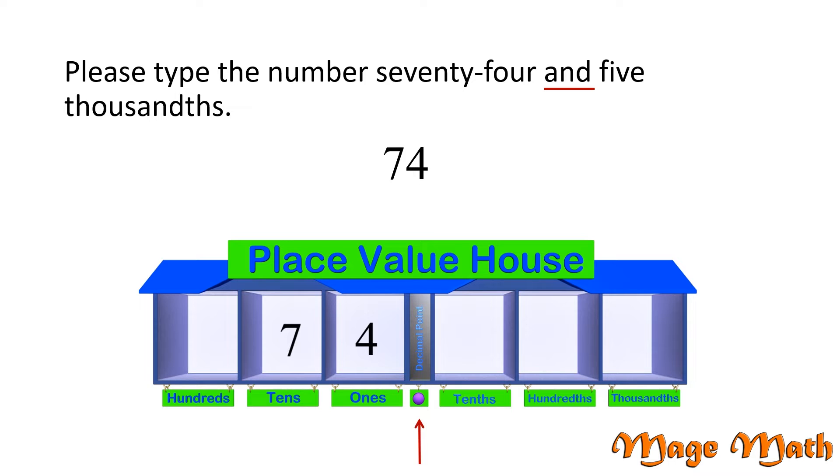Five thousandths means we need to place a five in the thousandths place value. Notice we have nothing written in the tenths and hundredths place values. Since we have a five in the thousandths place value, we will use zeros as placeholders in the tenths and hundredths places. The decimal form of this number is written like this. We read it as seventy-four and five thousandths. Great job!